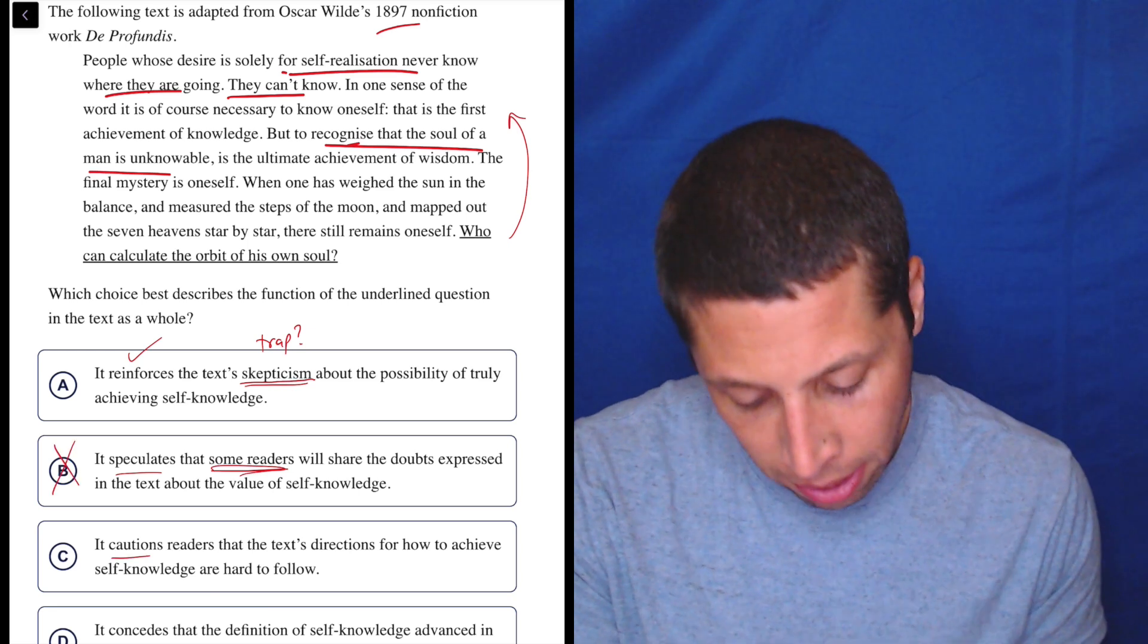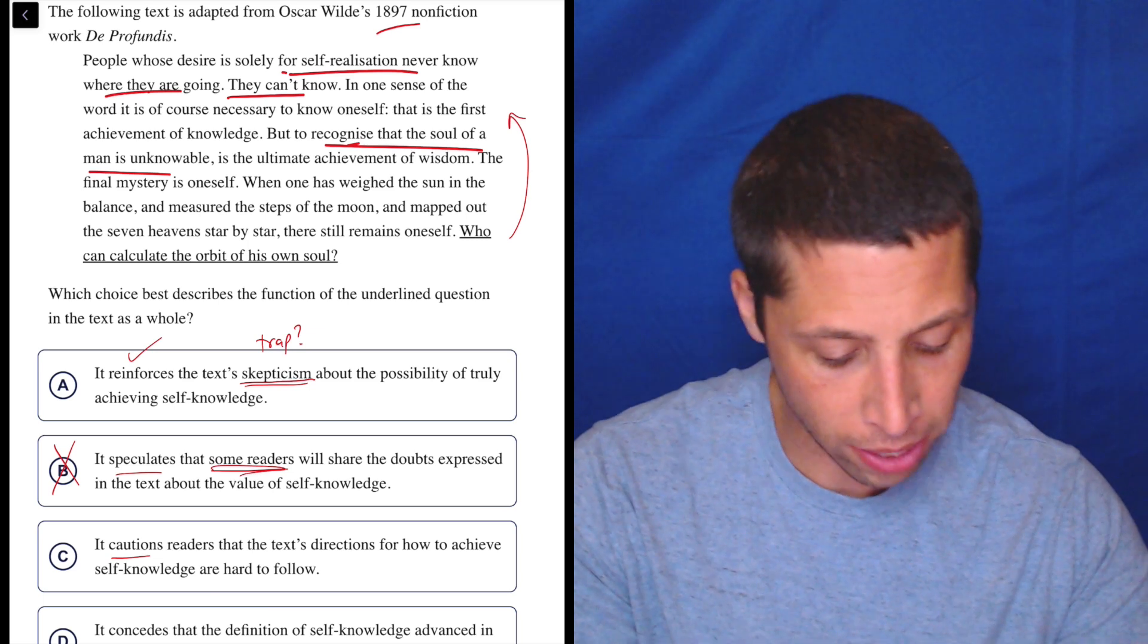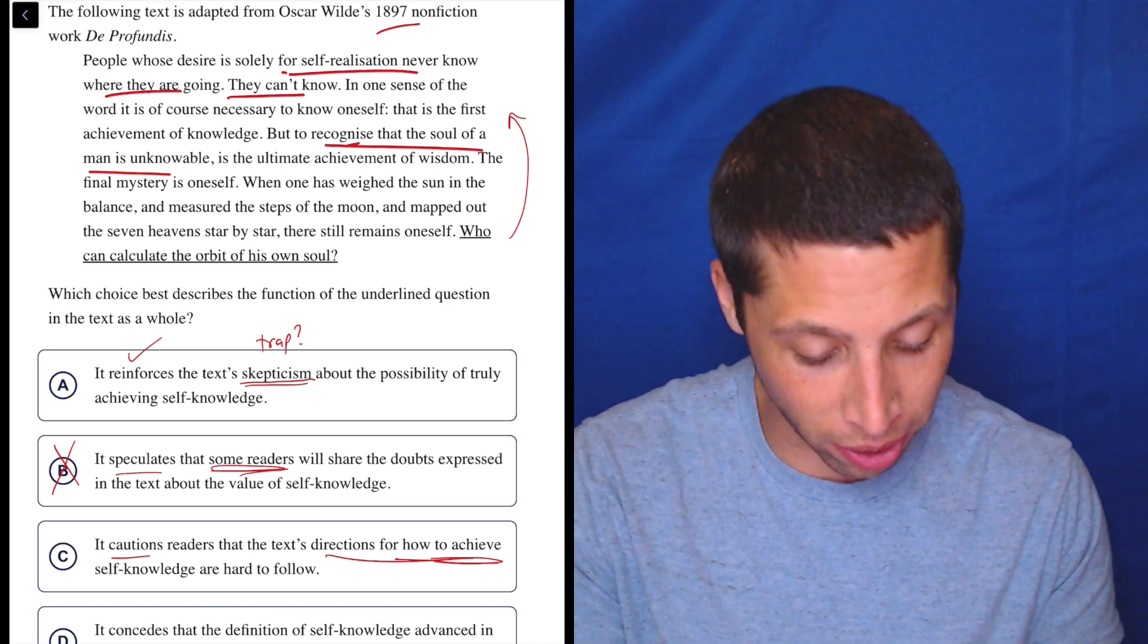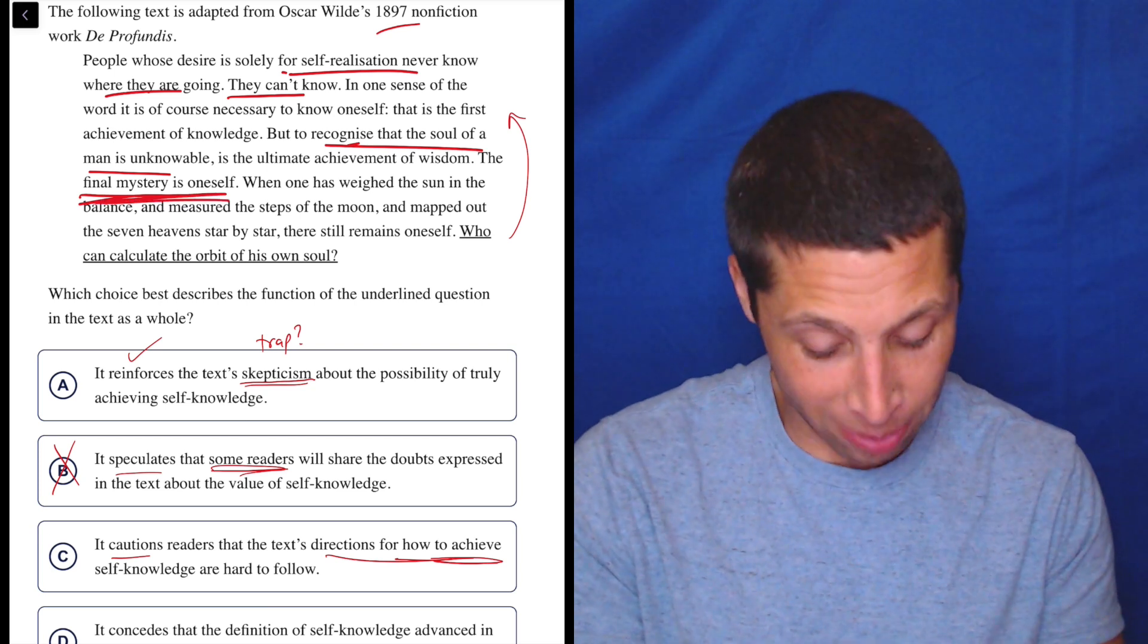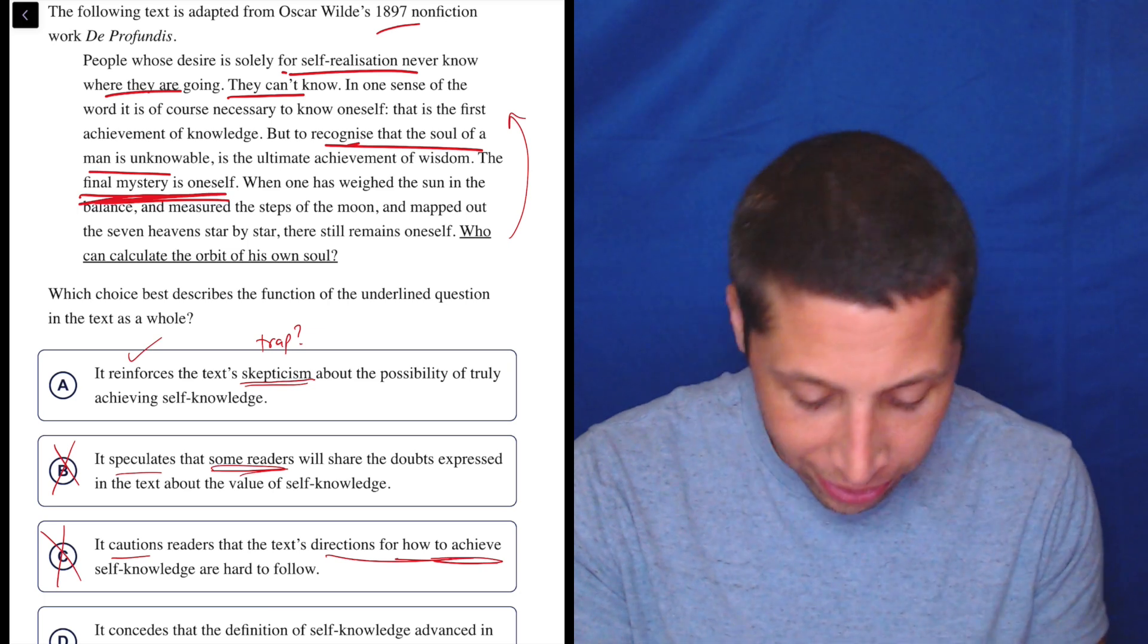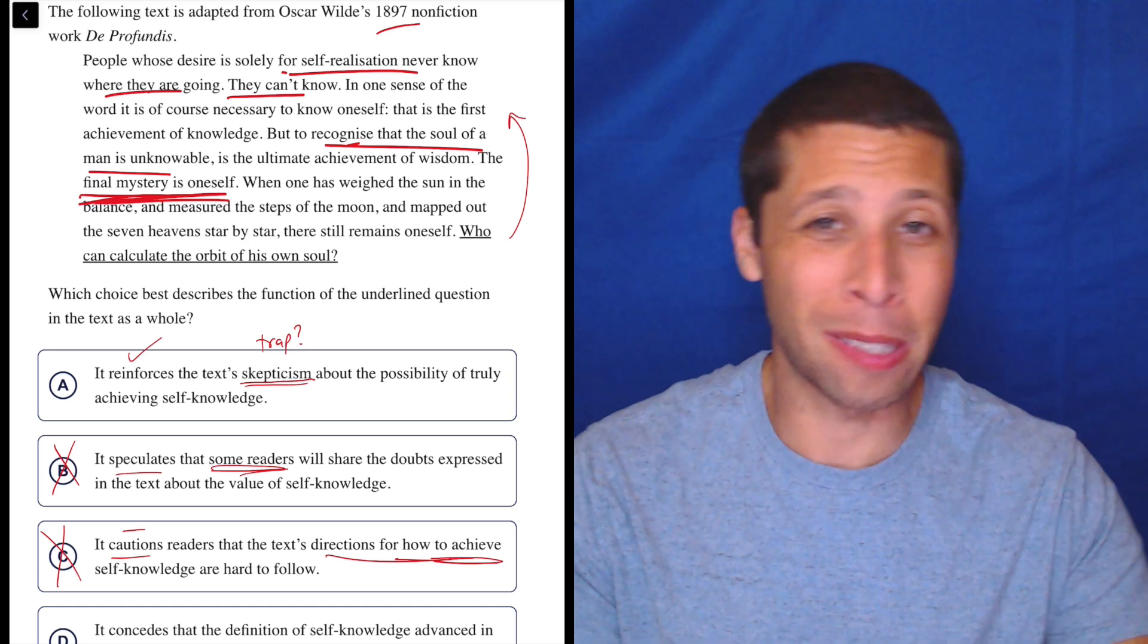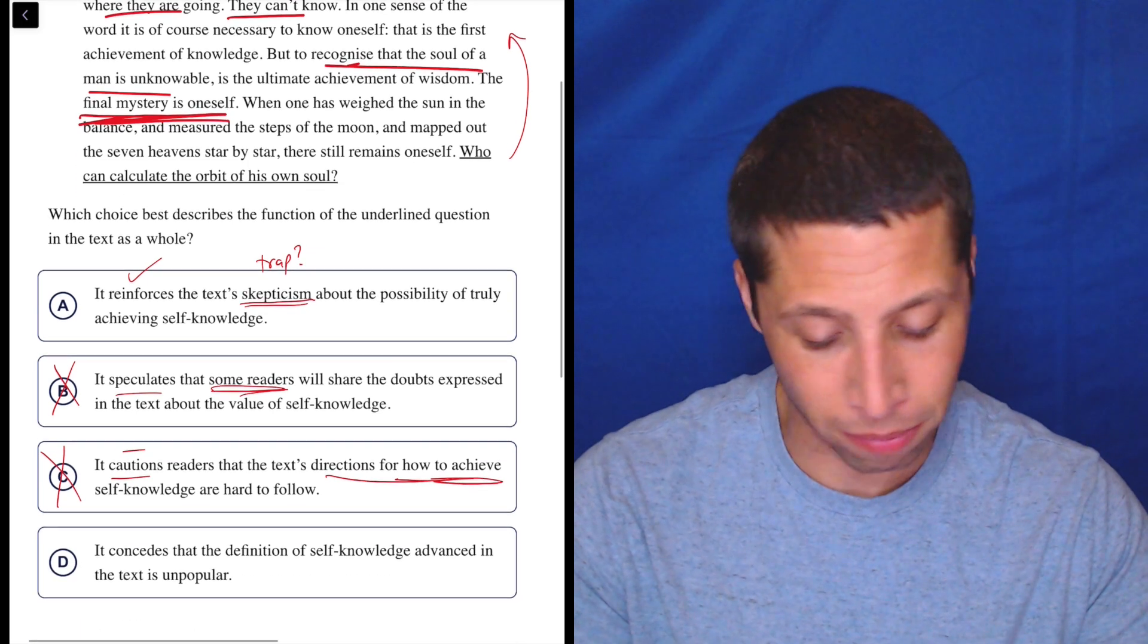C, it cautions. I don't love that. Cautions readers that the text directions for how to achieve self-knowledge are hard to follow. Well, does he give directions for achieving self-knowledge? I think the whole point is that you can't have self-knowledge, right? Like the final mystery is oneself. It seems like it's contradictory to what they're saying. And cautions, that's such a negative word. Who can calculate the orbit of his own soul? Is that really negative? You might not have a good sense of what it even means, but I feel like if it were negative like that, we would know. So this just feels off from connotation reasons.